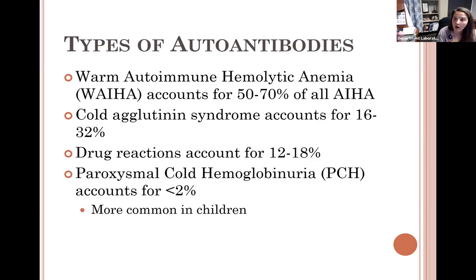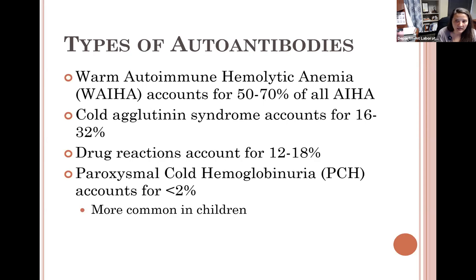Examples of cold agglutinins include anti-I, anti-P, Lewis A, and Lewis B — antibodies that react at room temperature and can cause ABO discrepancies. Drug reactions can cause a positive DAT in about 12 to 18% of cases. There is also a specific type called paroxysmal cold hemoglobinuria (PCH) — very rare, less than 2%, typically occurring following an infection such as chickenpox or respiratory infections.